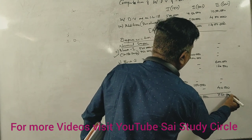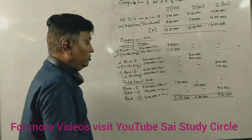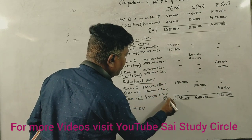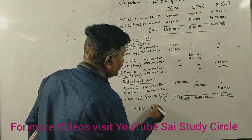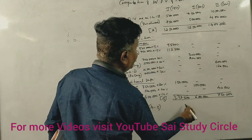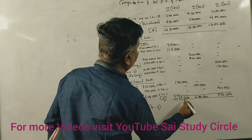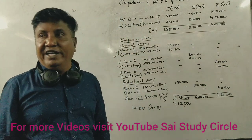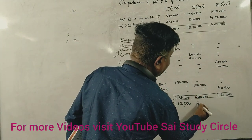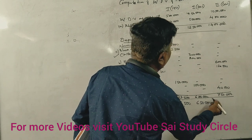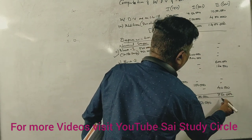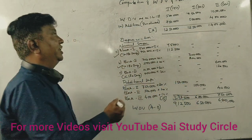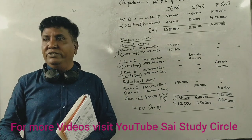Now written down value is 12 lakh 50 thousand minus 3 lakh 37 thousand, 9 lakh 12 thousand. This will give you 6 marks.